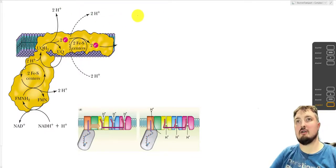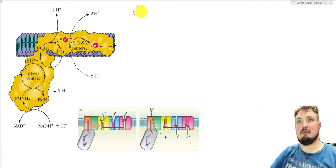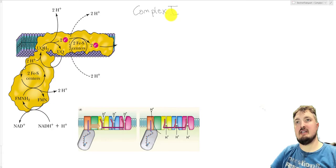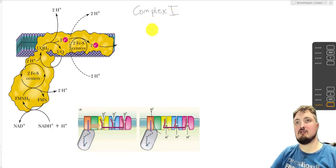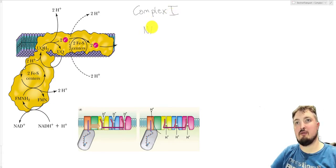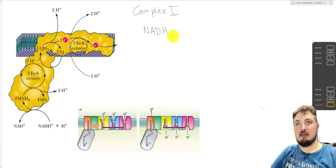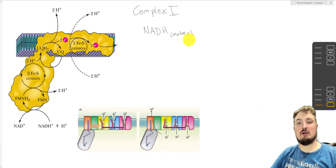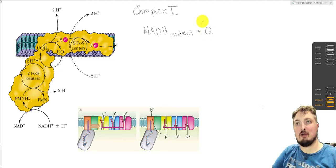Hi folks, today we're going to talk a little bit about Complex 1 of the electron transport chain. Complex 1 is the first enzyme of the electron transport chain, and it's responsible for effectively taking the electrons from NADH in the mitochondrial matrix. These are produced through the Krebs cycle, for example, and then adding these onto a molecule called coenzyme Q, or ubiquinone.